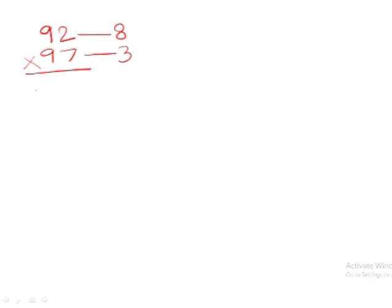So the first number that we are going to write here is the difference between any of these. So if you see here, 97 minus 8 gives you 89. And then if you multiply these two, you get 24. That's your answer.